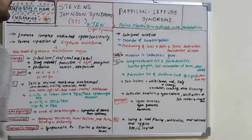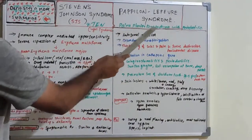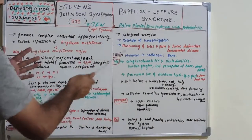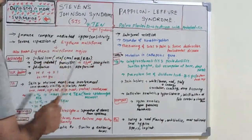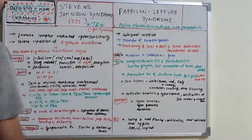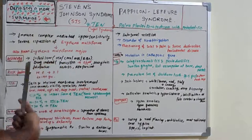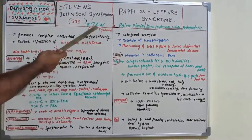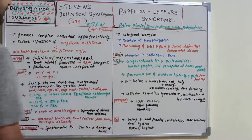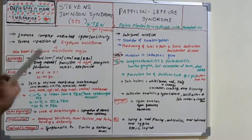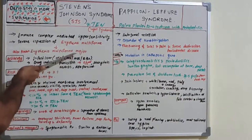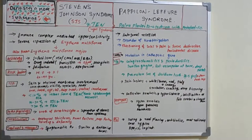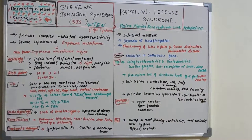Papillon-Lefèvre syndrome — palmoplantar keratoderma with periodontitis — is an autosomal recessive disorder of keratinization causing tooth loss and palmar/plantar keratinization. Stevens-Johnson syndrome, also known as toxic epidermal necrolysis or Lyell's disease in its severe form, is itself a severe expression of erythema multiforme. The severity progresses: erythema multiforme → Stevens-Johnson syndrome → toxic epidermal necrolysis.